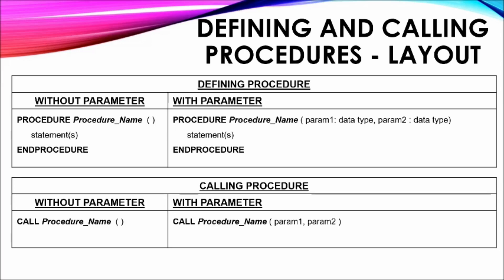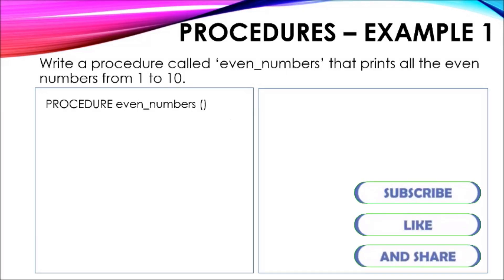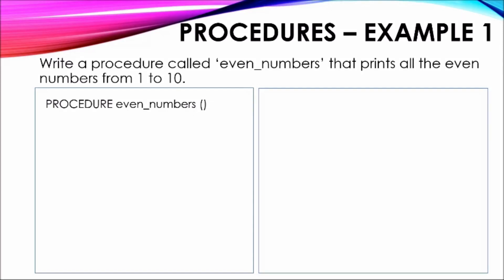Procedures Example 1: The first example requires the creation of a procedure called EvenNumbers that prints all the even numbers within the range one to ten. The solution begins with the definition of the procedure. The module header contains the module type followed by the name of the procedure. No parameter is being passed to this procedure, therefore nothing is placed within the brackets. A variable called count is declared as integer and initialized to zero.